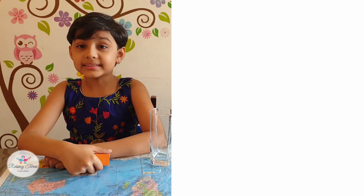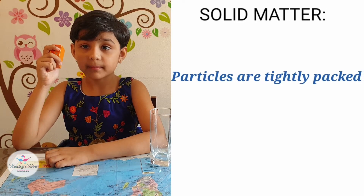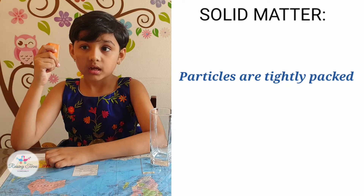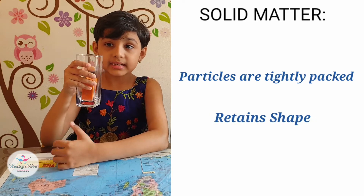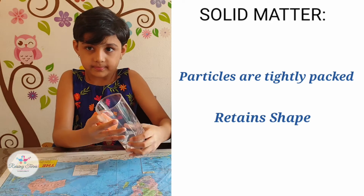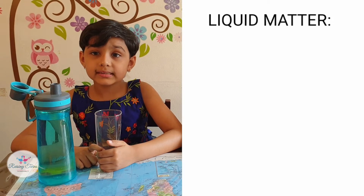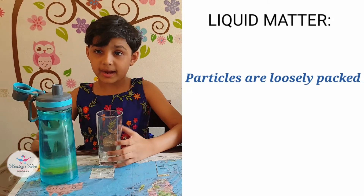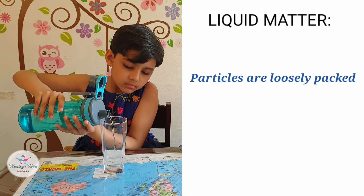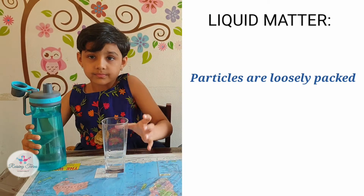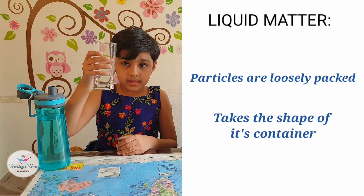So coming to the states of matter. Solid matter is composed of tightly packed particles. A solid will retain its shape — the particles are not free to move around. Example: wood. Liquid matter is made of more loosely packed particles. It will take the same shape of its container. Example: water.